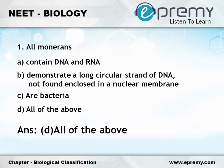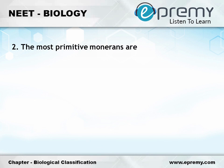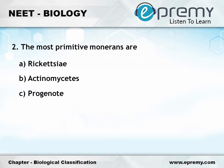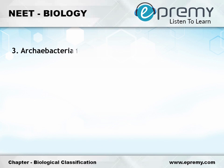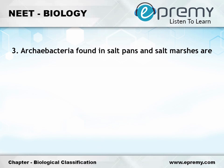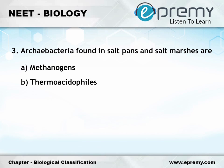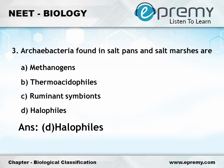Question number 2: The most primitive Monerans are — Option A: Protista; Option B: Tenomyces; Option C: Progenote; Option D: Archaebacteria. The answer is Option D, Archaebacteria. Question number 3: Archaebacteria found in salt pans and salt marshes are — Option A: Methanogens; Option B: Thermoacidophiles; Option C: Ruminant symbionts; Option D: Halophiles. The answer is Option D, Halophiles.